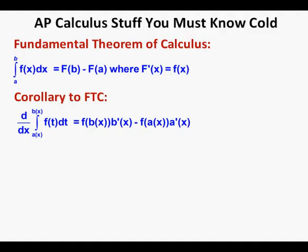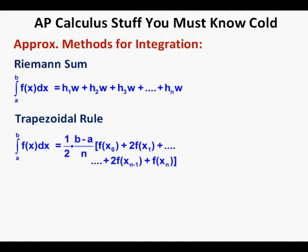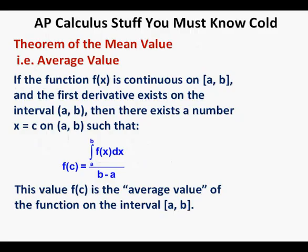Approximation methods for integration. Riemann sum: the integral from a to b of f(x) dx is approximately h₁w plus h₂w plus h₃w, and so on to h_n·w. The Trapezoidal Rule: the integral from a to b of f(x) dx equals ½ times (b minus a) over n times [f(x₀) plus 2f(x₁) plus 2f(x₂) plus ... plus 2f(x_{n-1}) plus f(x_n)]. Average Value Theorem: if f(x) is continuous on [a, b] and the first derivative exists on (a, b), there exists a number x equals c on [a, b] such that f(c) equals the integral from a to b of f(x) dx over (b minus a). This value of f(c) is the average value of the function on the closed interval [a, b].